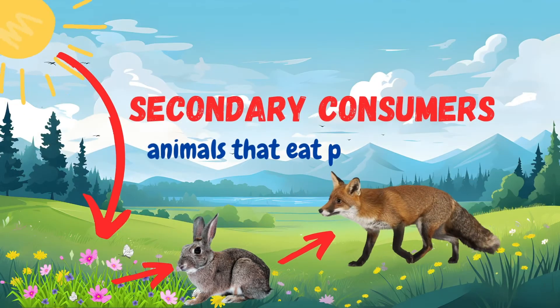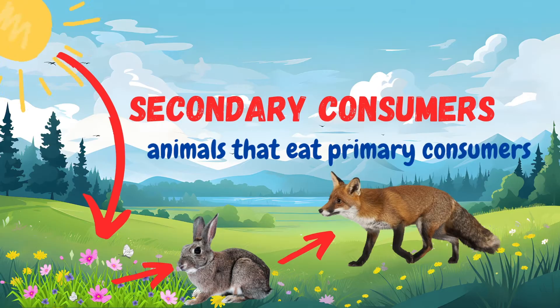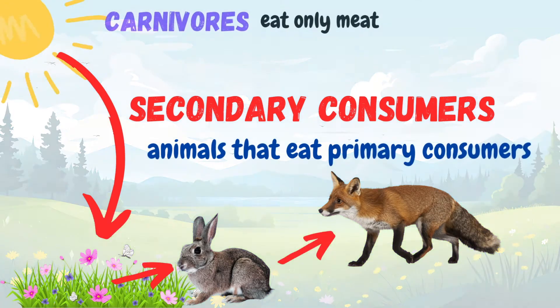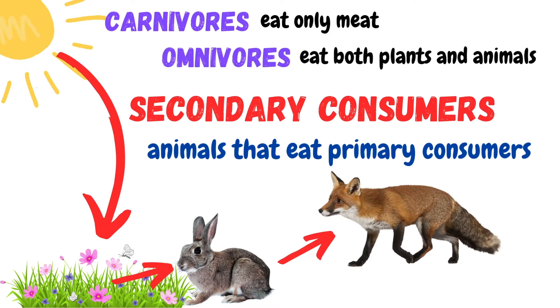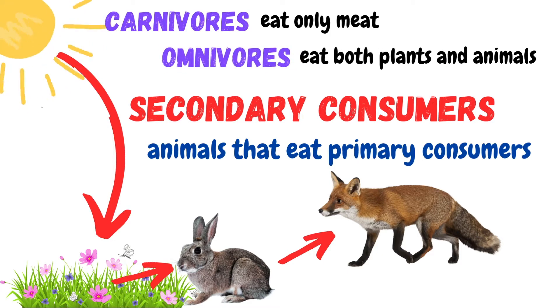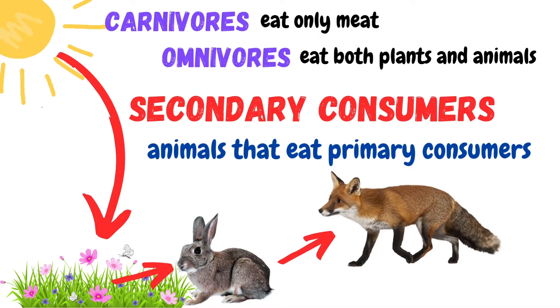Secondary consumers are animals that eat the primary consumers. They can be carnivores, meaning they eat only meat, or omnivores, which eat both plants and animals. These animals rely on herbivores for their energy.